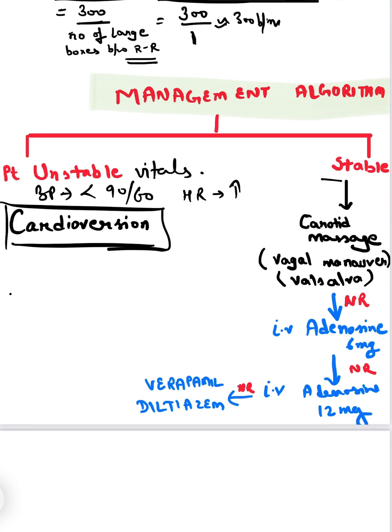But if the patient is stable — BP is normal, above 90/60 — then we have to give carotid massage. By this carotid massage we will try to decrease the heart rate via the vagal maneuver, because the vagus nerve inhibits or decreases the heart rate.